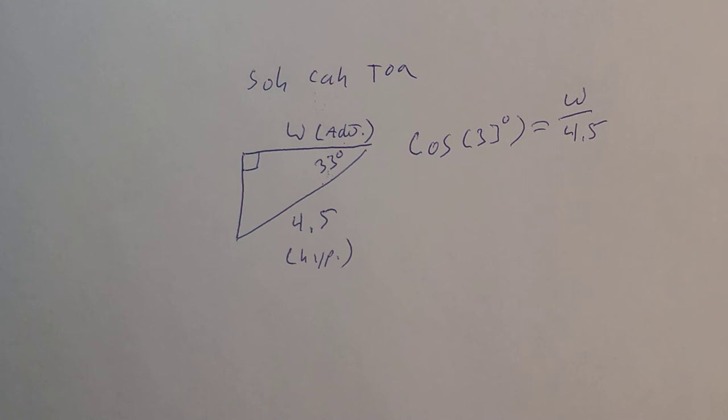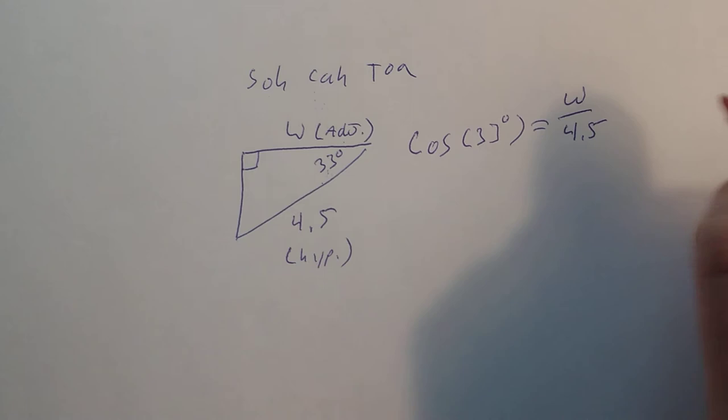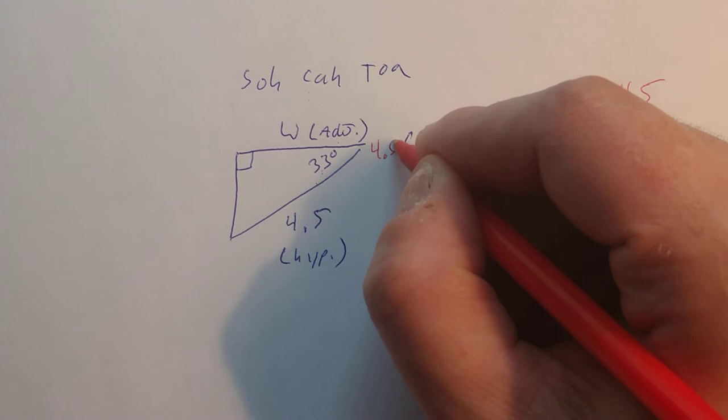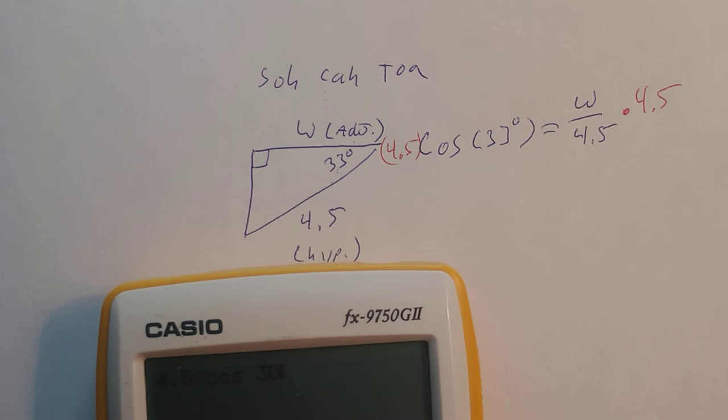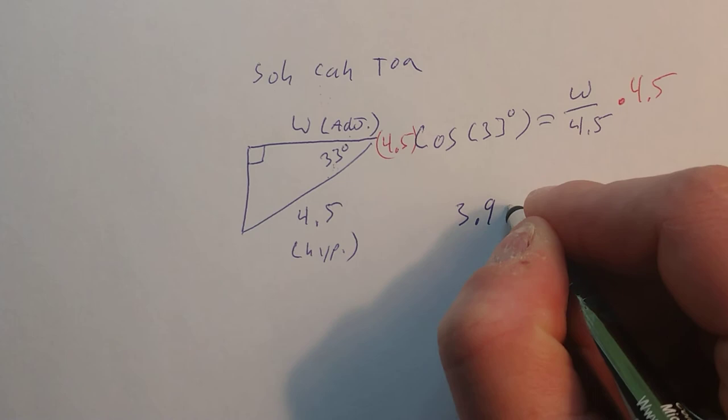To get W by itself, we multiply both sides by 4.5. So we get 4.5 times cosine of 33, and W is about 3.9.